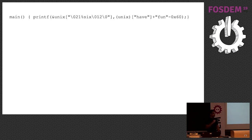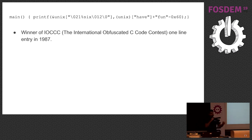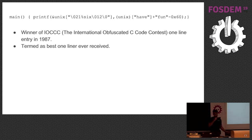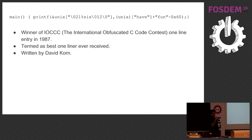It prints something. What does it print? Unix — it prints Unix on stdout. If you don't understand this code, it's fine. It was the winner of the IOCCC competition in 1987, and when it won, it was termed the best one-liner ever received. It was written by David Korn. Trying to maintain Korn Shell is like trying to debug this type of code — very smartly written, very hand-optimized, but very hard to maintain.